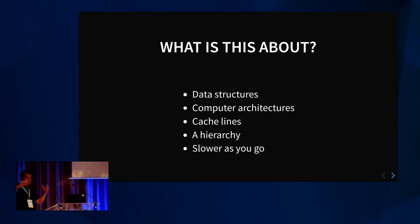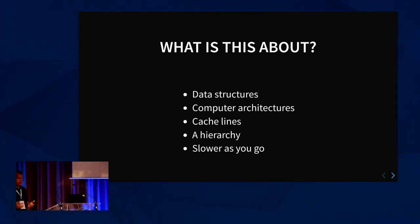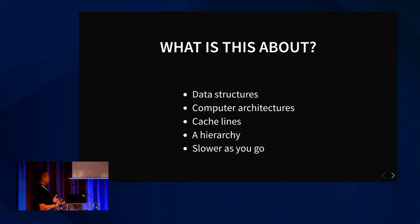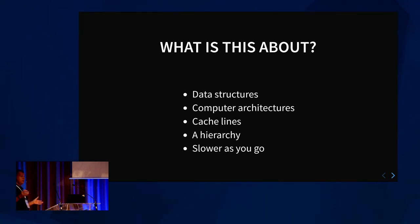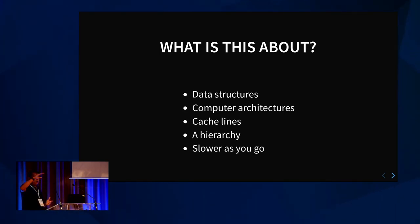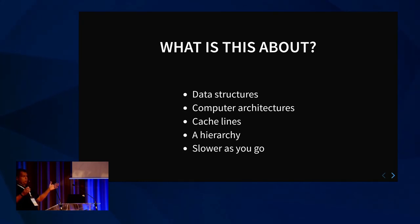All different computer architectures have ways for you to optimize access to memory and data structures. You have cache lines, you have a hierarchy — fast memory, registers — all sorts of components to optimize accessing and to batch things going to higher levels of the memory hierarchy.